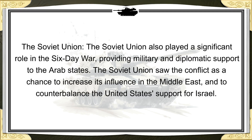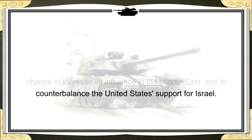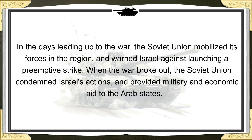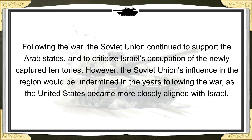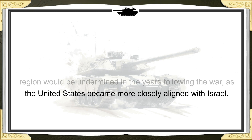The Soviet Union also played a significant role in the Six-Day War, providing military and diplomatic support to the Arab states. The Soviet Union saw the conflict as a chance to increase its influence in the Middle East and to counterbalance the United States' support for Israel. In the days leading up to the war, the Soviet Union mobilized its forces in the region and warned Israel against launching a preemptive strike. When the war broke out, the Soviet Union condemned Israel's actions and provided military and economic aid to the Arab states. However, the Soviet Union's influence in the region would be undermined in the years following the war, as the United States became more closely aligned with Israel.